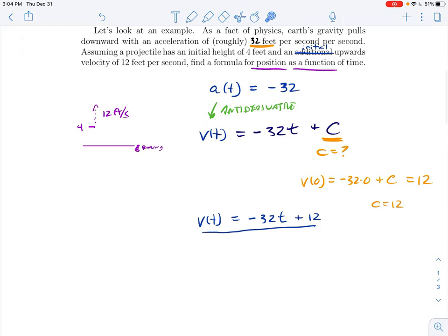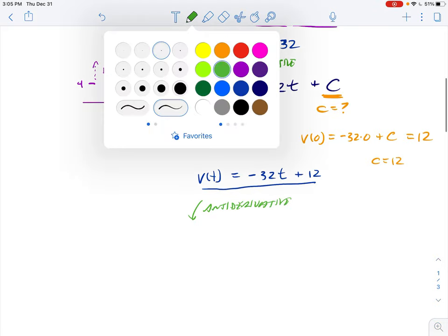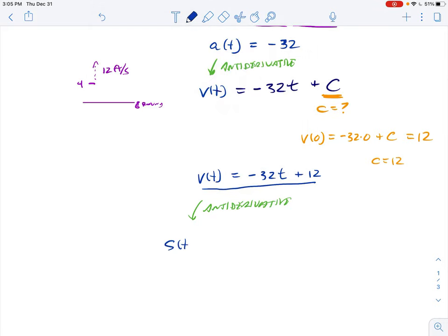That's not our final answer, but it's a very useful piece of information. We want to know a formula for position as a function of time. So let's take another antiderivative. If I do that again, my position function would be negative 16t squared, right? You think of this as t to the first power. So to do an antiderivative, we bump it up, divide by 2, plus 12t.